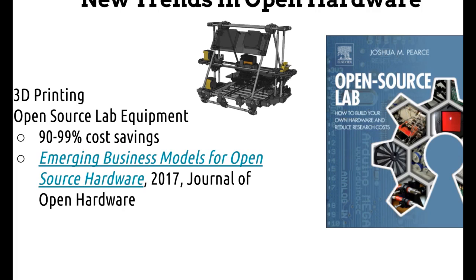Another great case — a paper that just came out by Joshua Pierce from Michigan Tech University — is about emerging business models for open source hardware. He mentions particularly the case of open source scientific equipment, where things like various equipment can get you 90 to 99% cost savings while retaining high quality. Things like optical mounts for laser systems, syringes, probes, and measurement devices that would otherwise be much more expensive, but are much more accessible in open source.